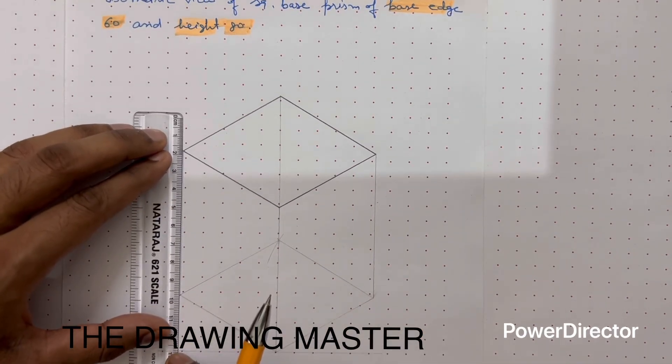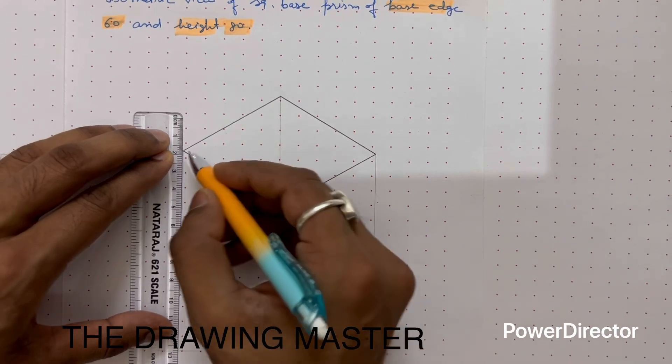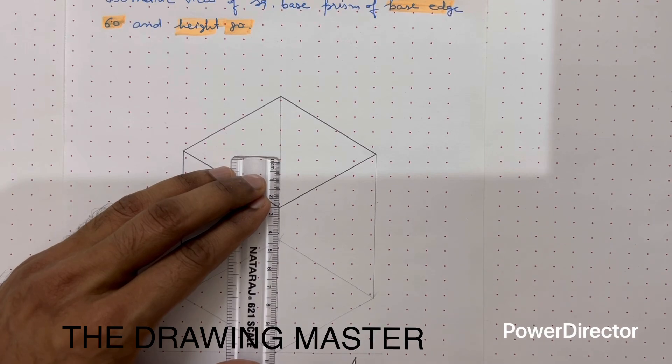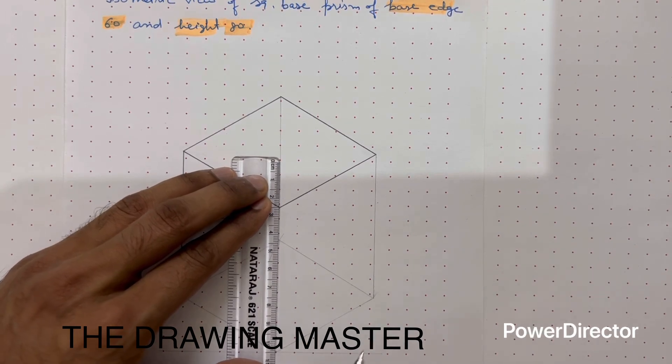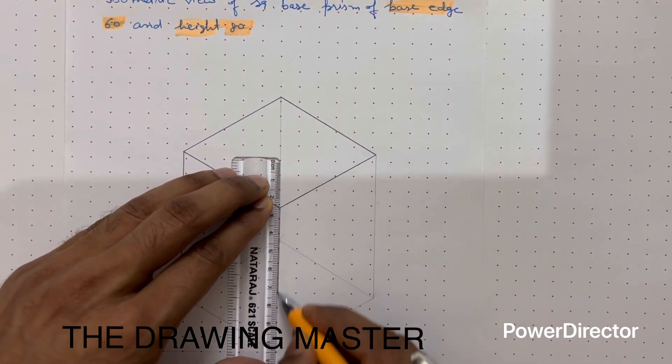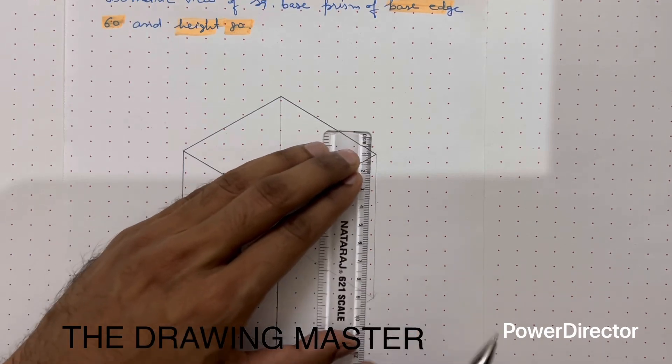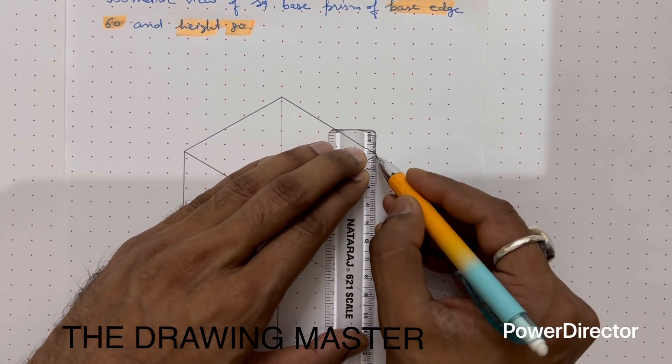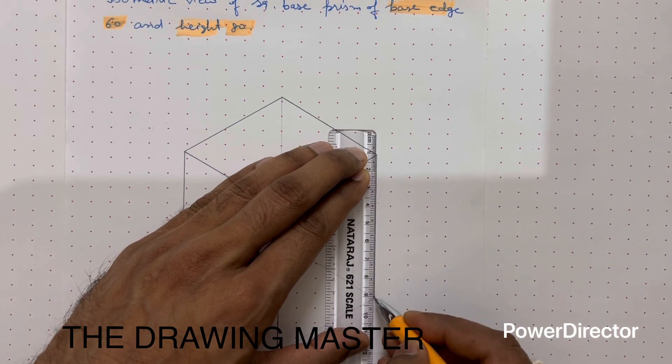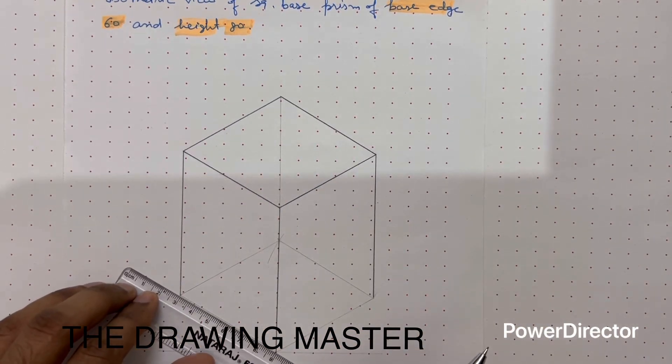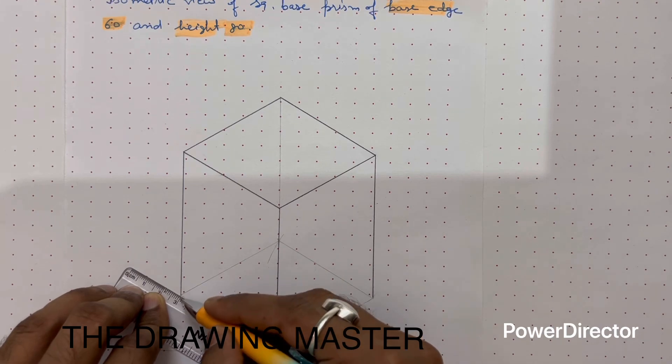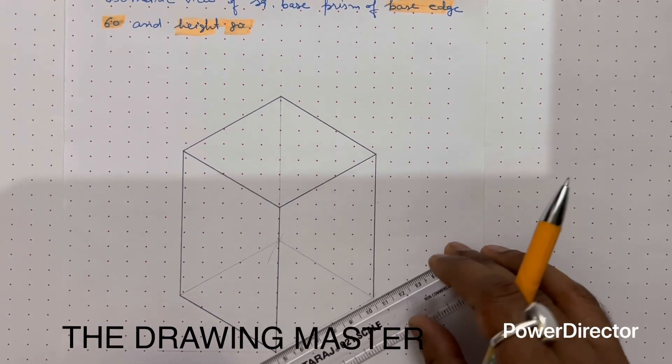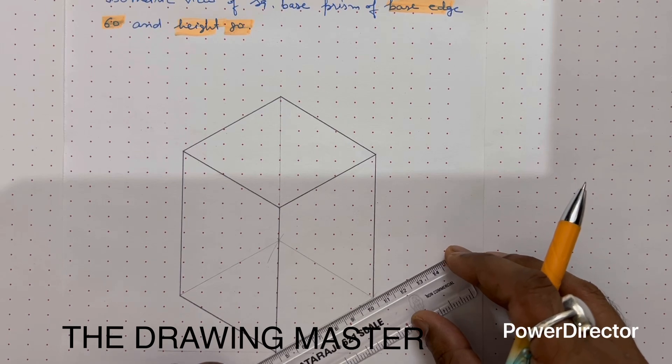Now we have to generate the side edges of the prism. These all the lines are continuous thick lines. This is the base edge which will be visible from the front and side.